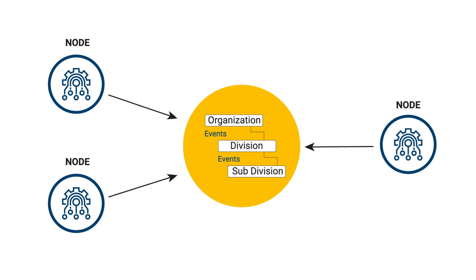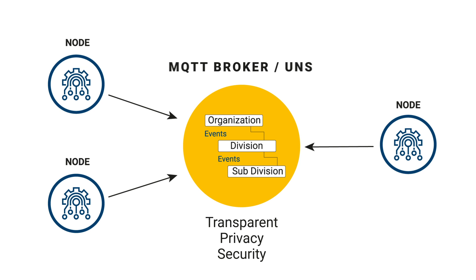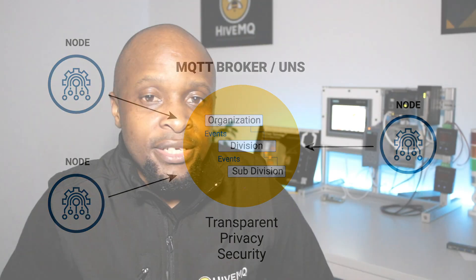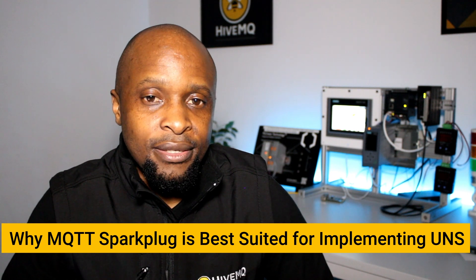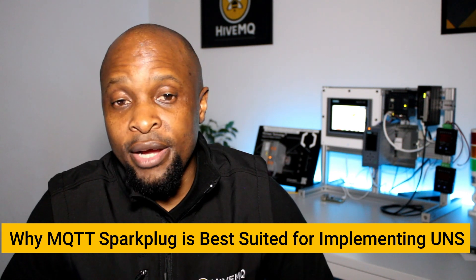Additionally, the technology needs to make the data transparent and available to all who have the authority to access it. While a few communication technologies may fit the profile, MQTT is by far the most commonly used technology for implementing the Unified Namespace, and here's why.